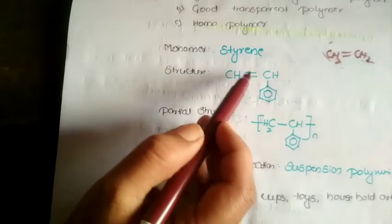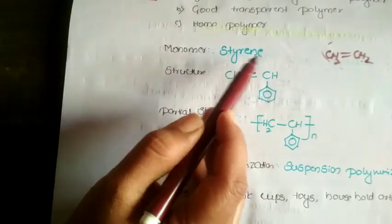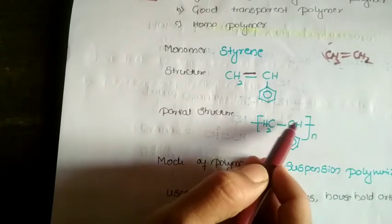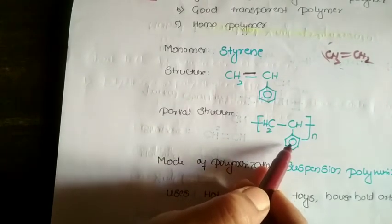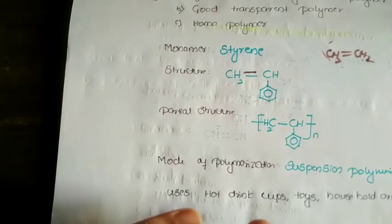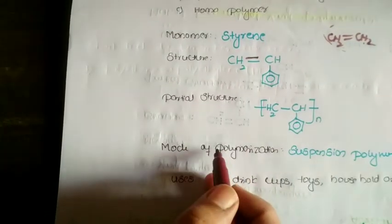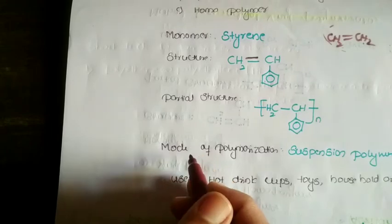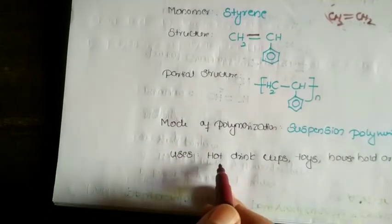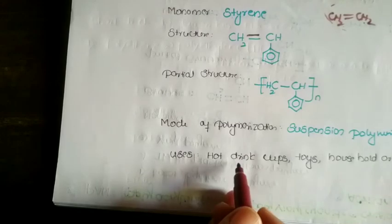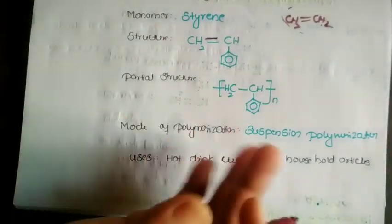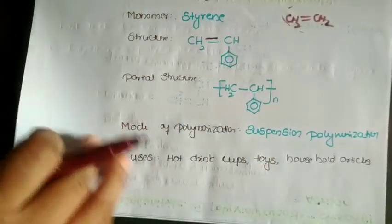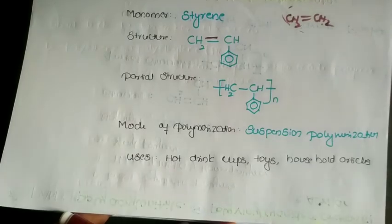The partial structure of polystyrene is –CH₂–CH– with a benzene ring, where the bond acts as a link showing continuation of the chain. The mode of polymerization is suspension polymerization, a kind of addition polymerization. Polystyrene is used in hot drink cups and various household plastic articles.